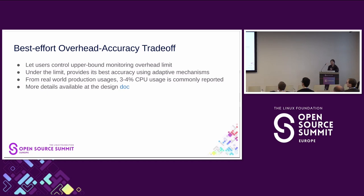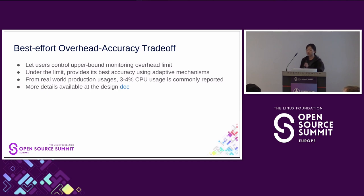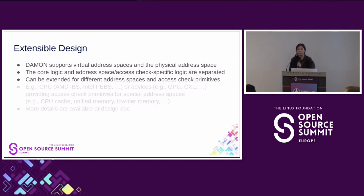One characteristic of DAMON is its best-effort overhead-accuracy trade-off. It allows users to set the upper bound monitoring overhead as they want, and under that limit, it provides its best effort for accuracy using some adaptive mechanisms. From real-world production usage reported so far, DAMON commonly uses only about 3 to 4 percent CPU, even when used on real-world products. The second characteristic of DAMON is its extensible design. DAMON separates layers for its core logic, the lower-level logic for checking access to specific memory addresses, and logic for specific address spaces such as virtual and physical. They are in separate layers and therefore can be extended for different address spaces and additional access-check primitives.